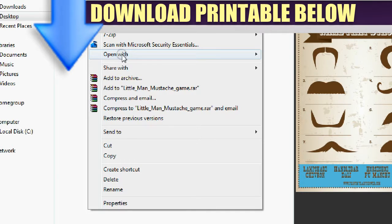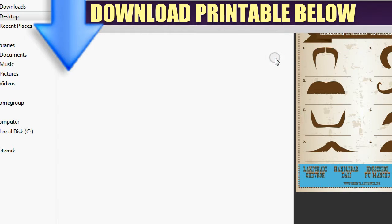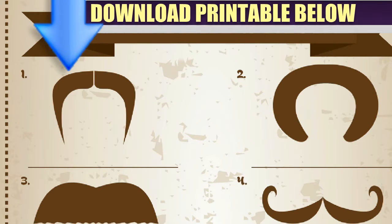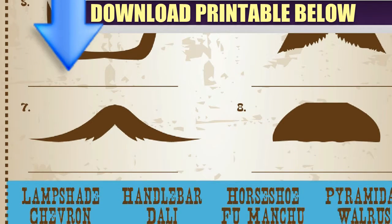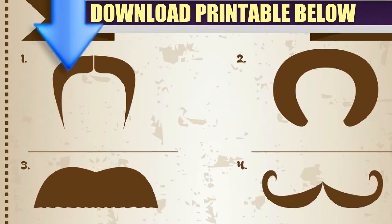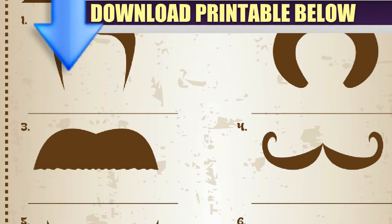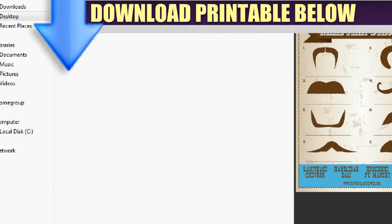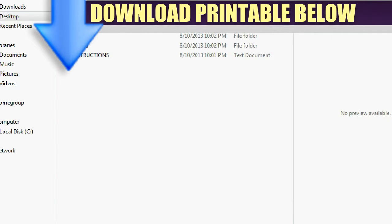You also get the 'Little Man' game — a really cool 'Match the Mustache' game where your guests have to match the mustache with the correct type. There's a word bank with types like lampshade, chevron, handlebar, dolly, horseshoe, Fu Manchu, pyramid, and walrus. It also comes with an answer key, so don't worry if you don't know all the mustaches.